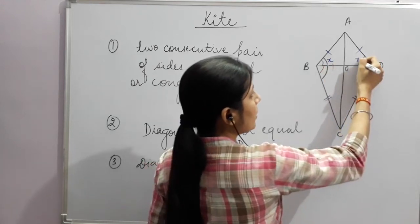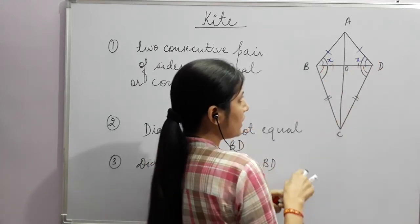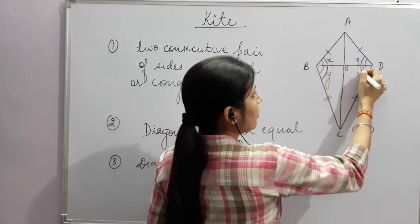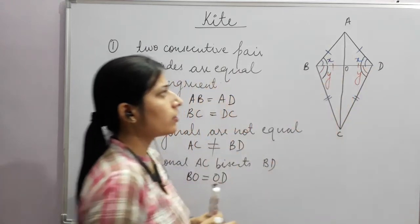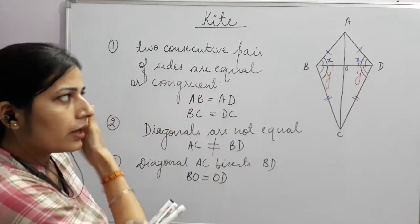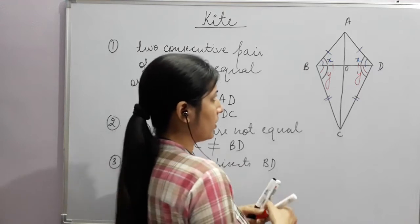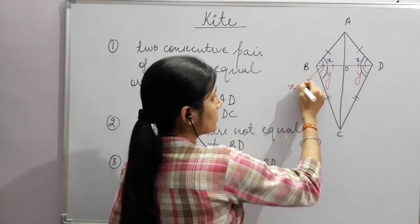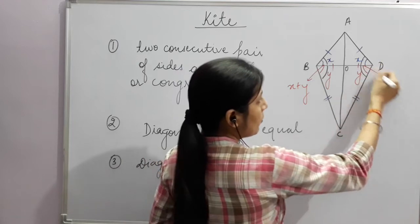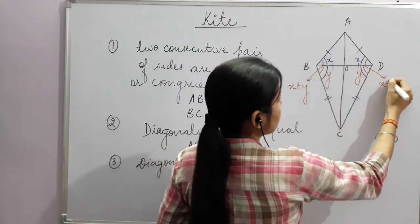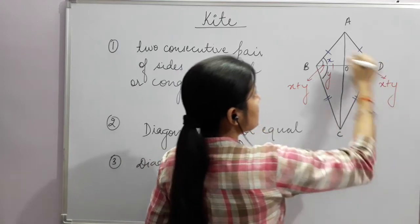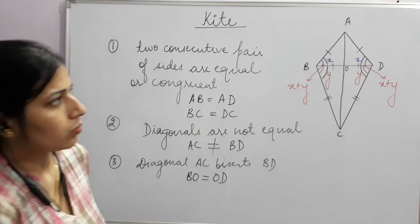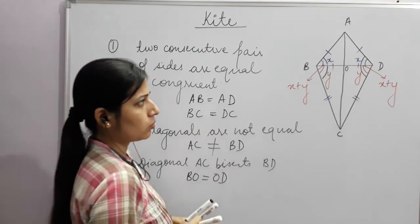I am denoting these with variables. This angle is x, so the corresponding one is also x. The lower angle is y, so the corresponding one is also y. The full angle combined becomes x + y, and both full angles are equal to each other.